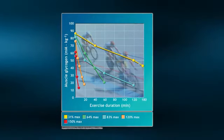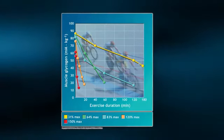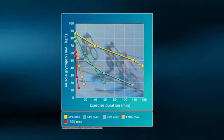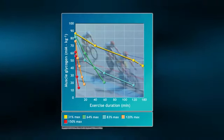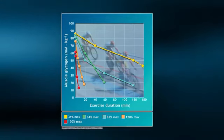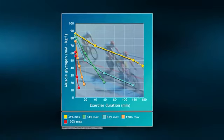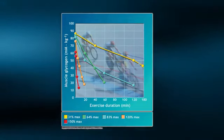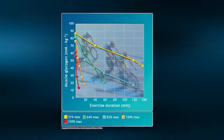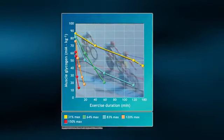This can be explained by one, a lower rate of ATP utilization at this workload, and two, a greater reliance on fats as a fuel source as per the crossover concept, and three, a greater recruitment of our type 1 muscle fibers, which have the capacity to use glycogen and glucose aerobically, thereby slowing the rate of carbohydrate utilization.